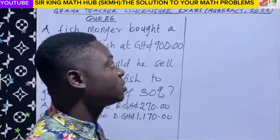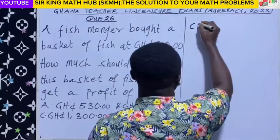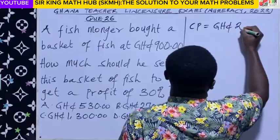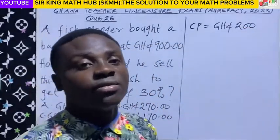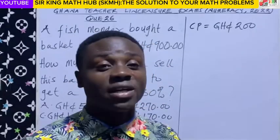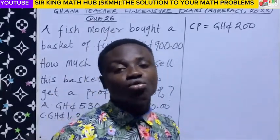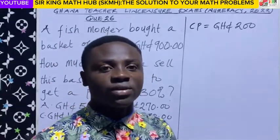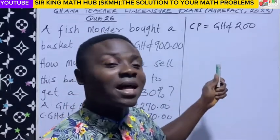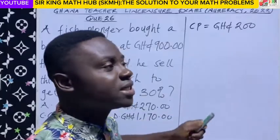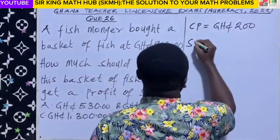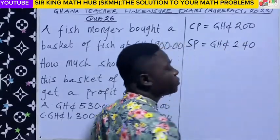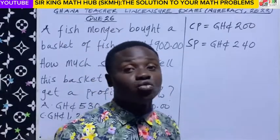You bought an item from the manufacturer at the cost of 200 Ghana cedis. Now since you are a trader, you are interested in making profits. So to make a profit, you have to sell this item at a price higher than the cost price. So let's say you decide to sell it at a cost of 240 Ghana cedis.